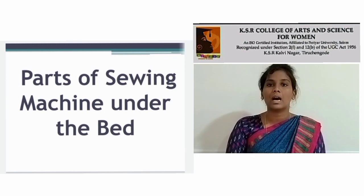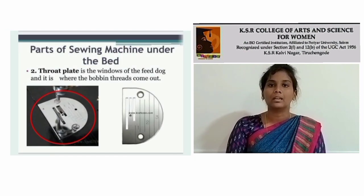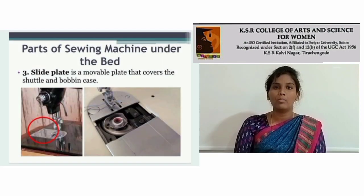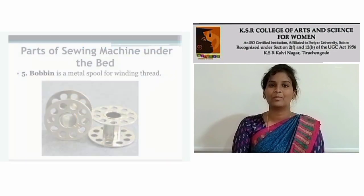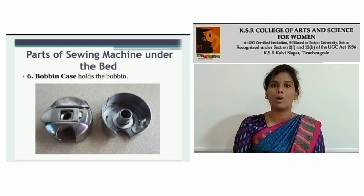Parts of sewing machine under the bed: Feed dog — moves the fabric while stitching. Thread plate — it is the covering of the feed dog and it is where the bobbin thread comes out. Slide plate — it is a movable plate that covers the shuttle and bobbin case, and holds the bobbin case while sewing. Bobbin — is the metal spool for winding thread. Bobbin case — holds the bobbin.